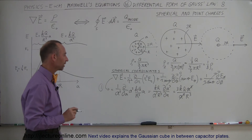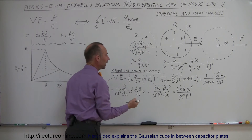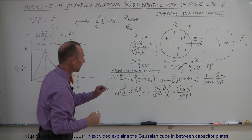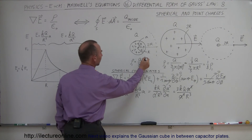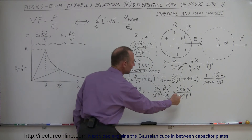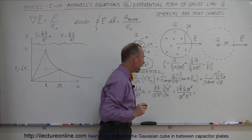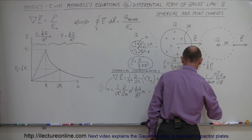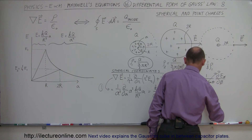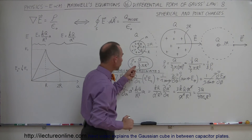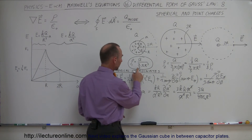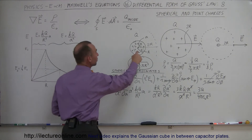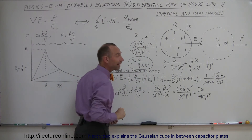That is the divergence of the electric field inside the sphere, and it must equal the charge density divided by epsilon naught. Substituting K equals 1 over 4π epsilon naught, this becomes 3Q divided by 4π epsilon naught R cubed. This is exactly the charge density of the sphere with the factor of 3 accounted for. So the charge density in the differential form does indeed mean the charge density of the sphere, as long as we stay inside it.